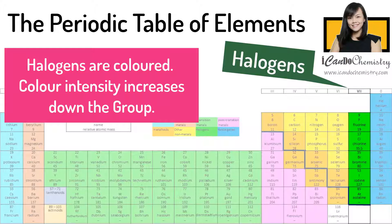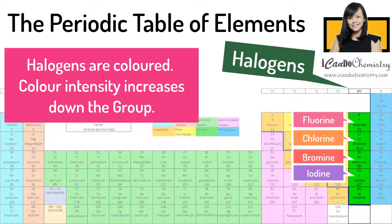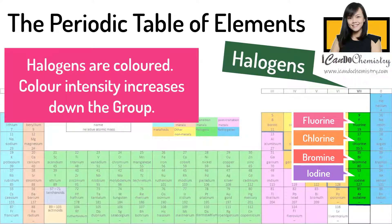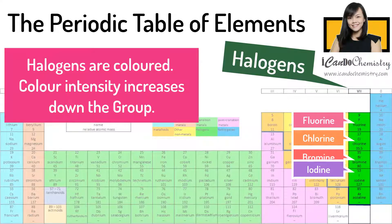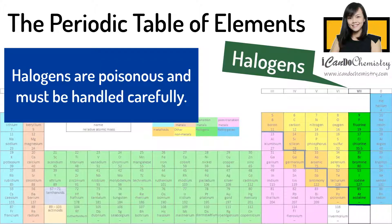All the halogens are colored. The color intensity increases down the group. Fluorine is pale yellow. Chlorine is pale yellow-green. Bromine is reddish-brown, while iodine is purplish-black.